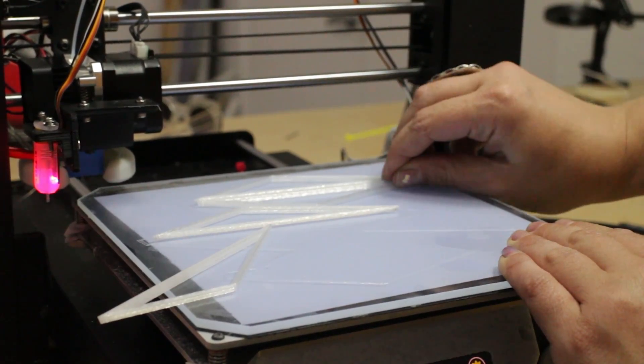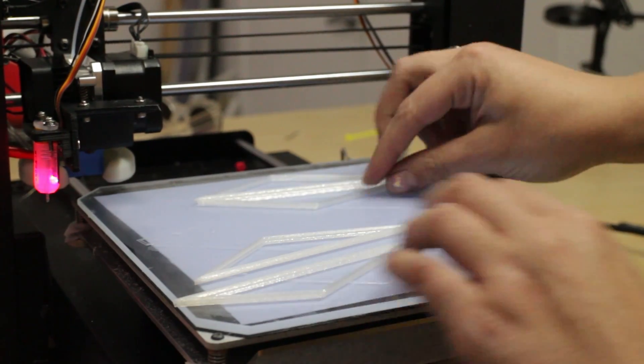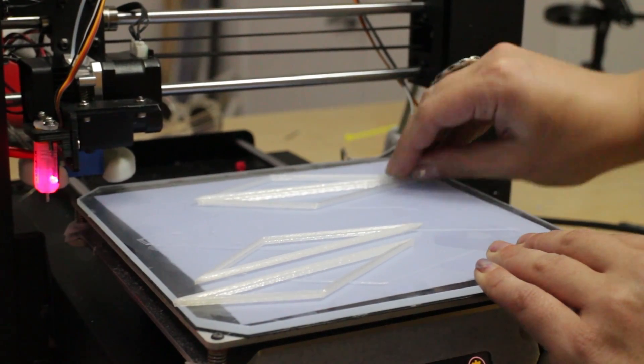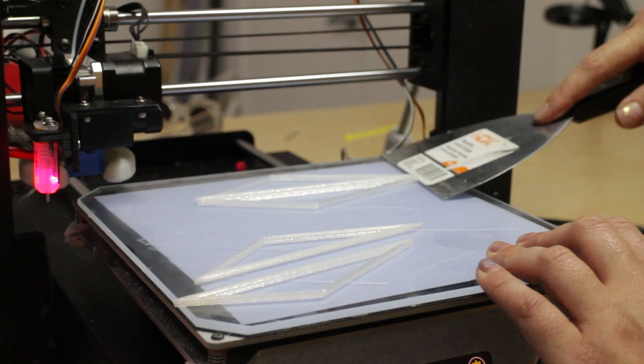If anyone has any tips on optimizing parts on your 3D printer's bed, like nesting parts better, I'd love to hear them and cut down on this repetitious process.